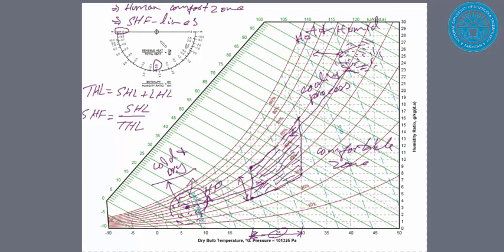So if I draw a line from this central point anywhere, anywhere, this line, the slope or inclination of this line indicates the sensible heat vector.